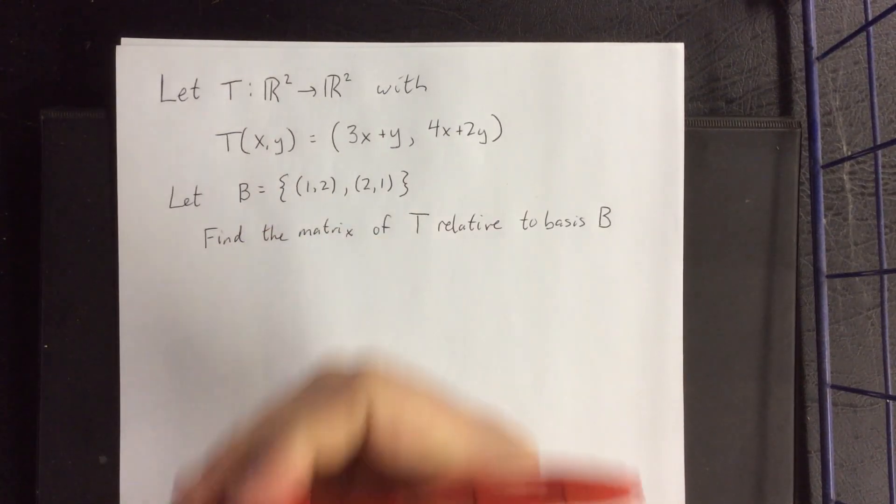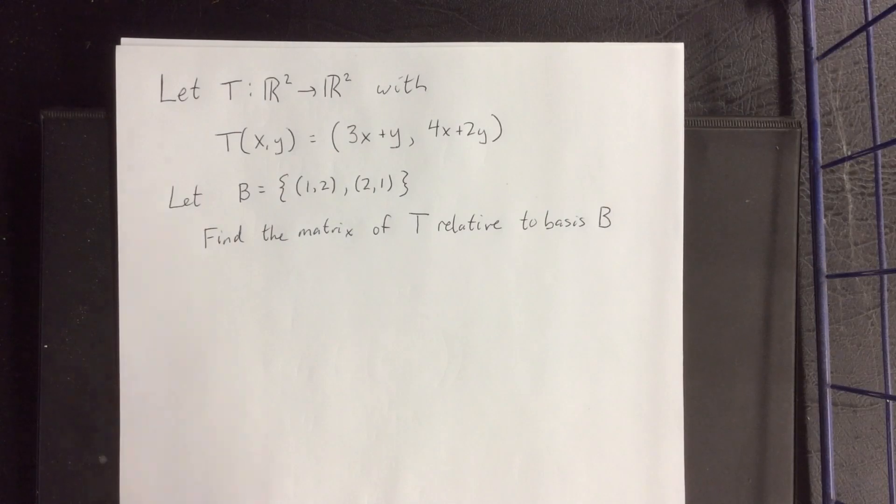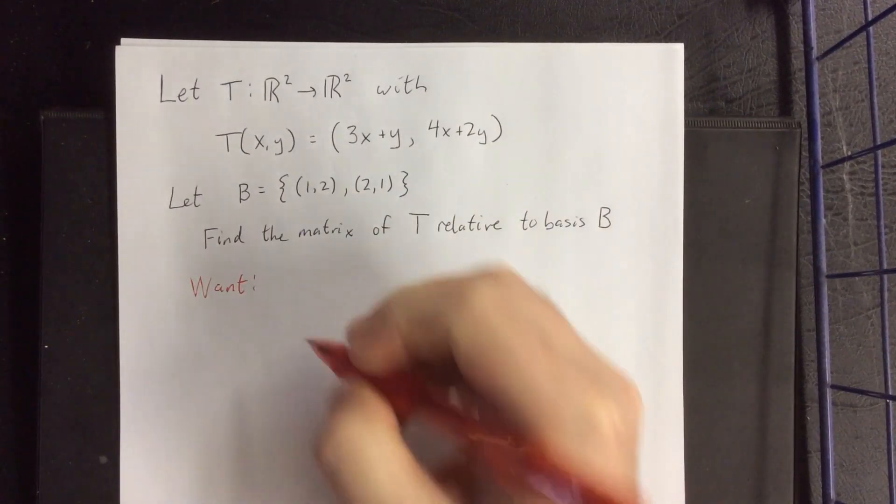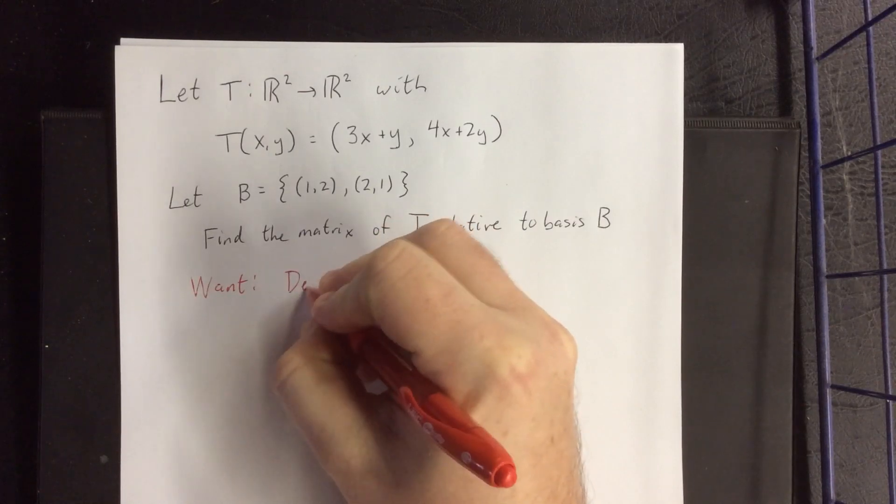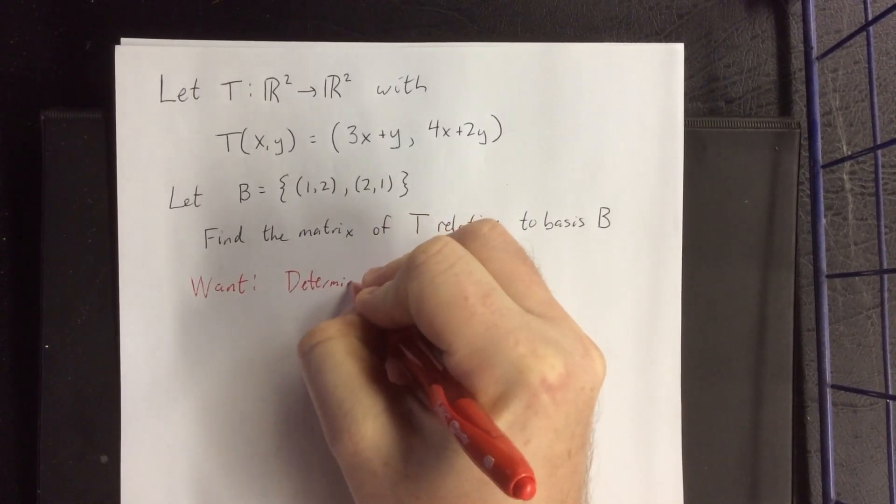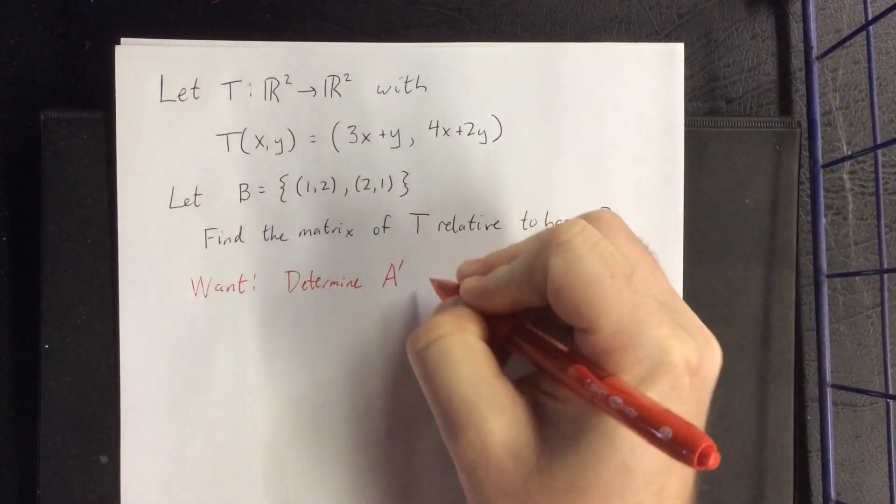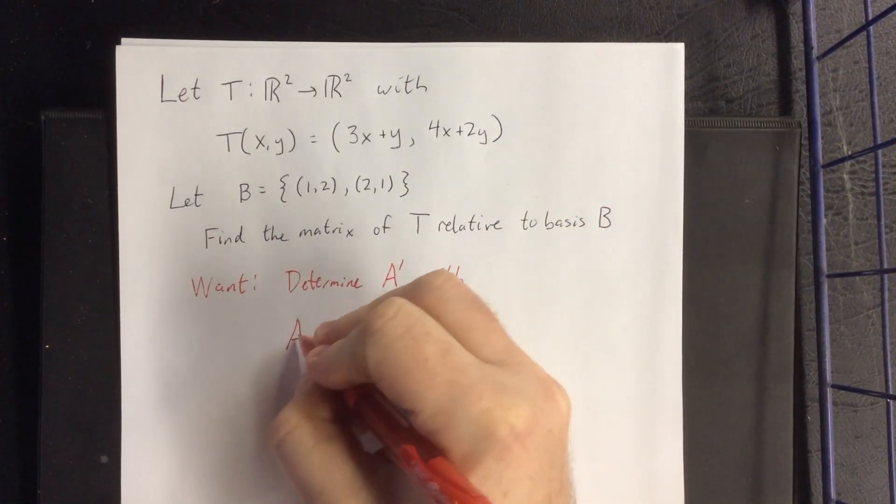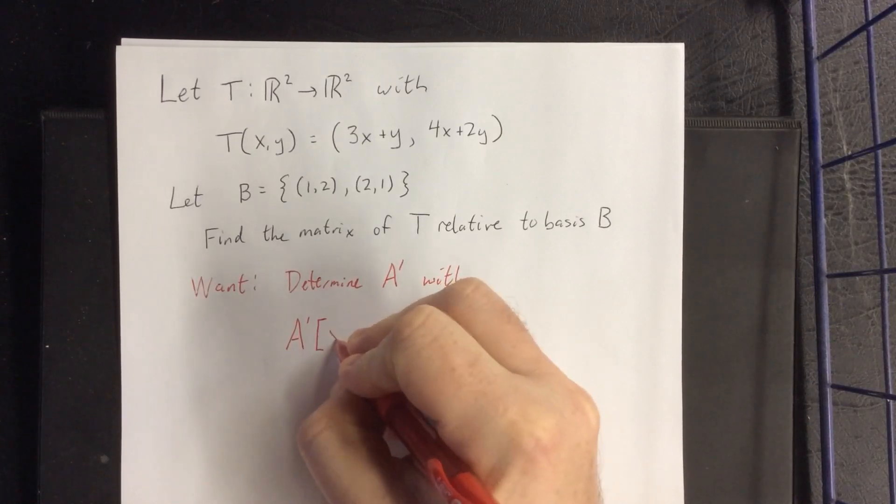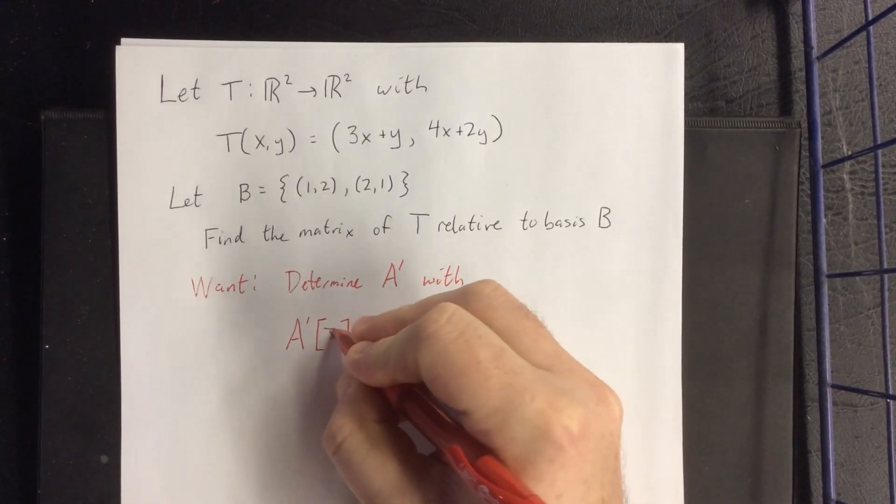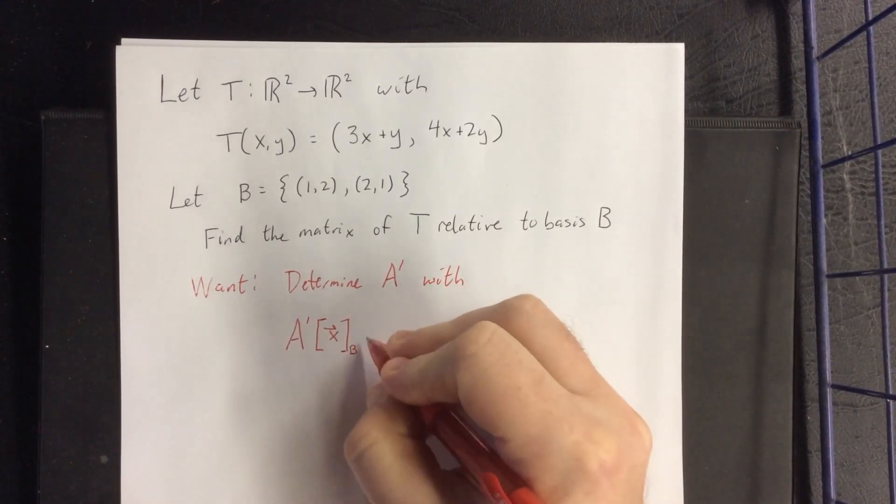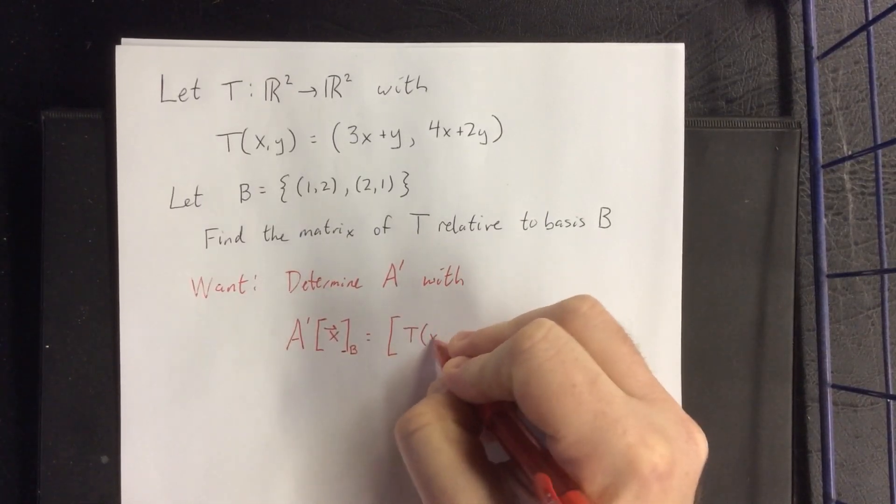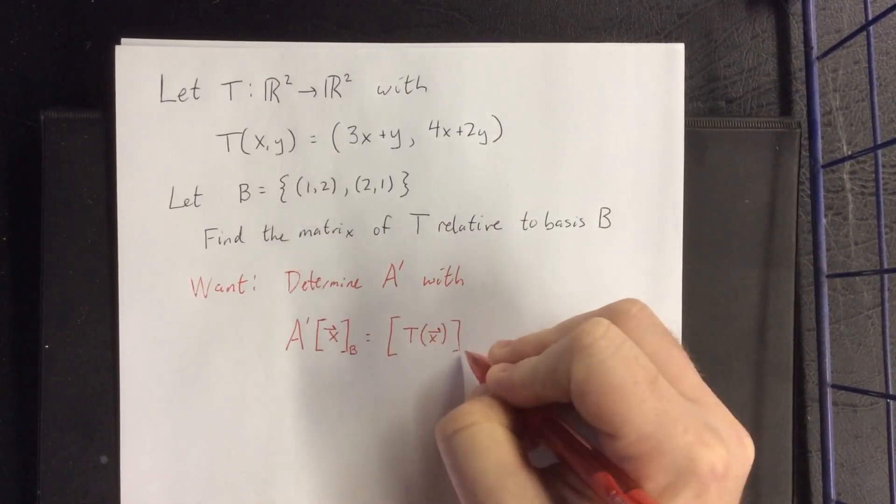So just to give a quick interpretation to what it is that we're doing here, here's what we want. We want to determine A'. With multiplying A' times a coordinate matrix [x]_B, we want that to be the same as the image of that vector relative to the basis B, [T(x)]_B.